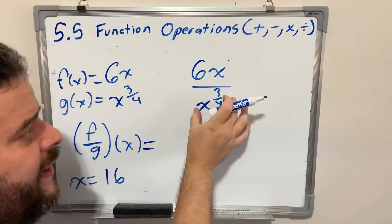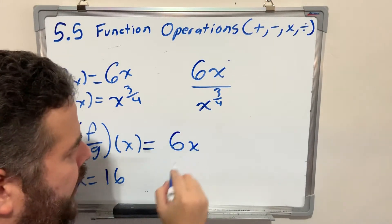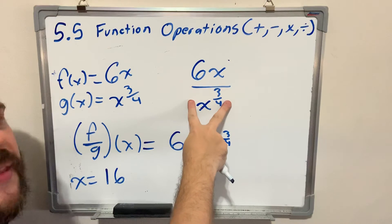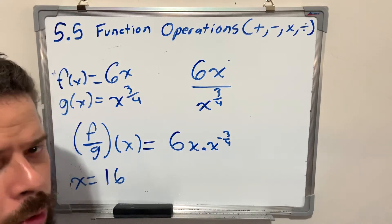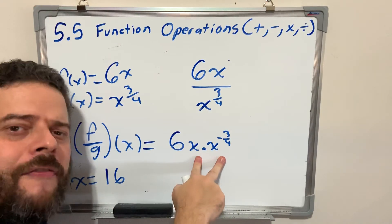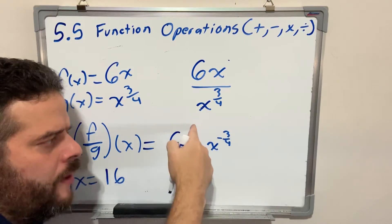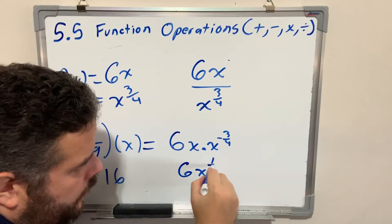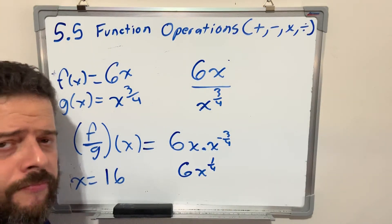Step one, I'm going to send this variable up here, multiply, and change the sign. 6x times x to the negative three-fourths. I sent this denominator to my numerator and changed the sign of the exponent. The sign of the variable or coefficient stays the same. After I send it up here, now this is a multiplication of identical variables. When I multiply, we just have to add the exponents. 1 minus 3 quarters is 6x to the 1 quarter. That's the final expression. That's the division.